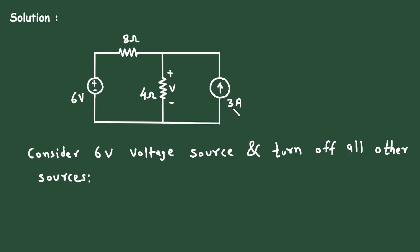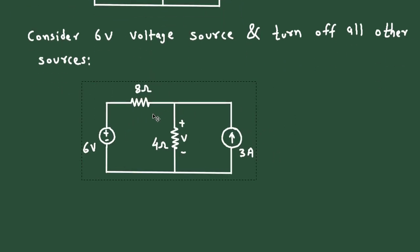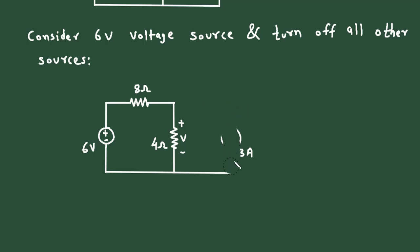The current source is turned off by replacing it with an open circuit. So the current source gets open circuited and the circuit now looks accordingly. We call this resulting voltage V prime.